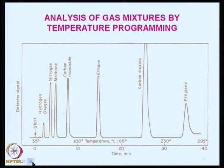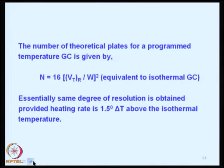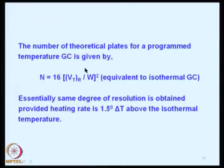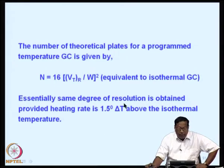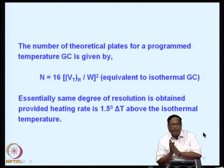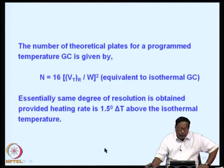This example clearly illustrates that temperature has a very profound effect on the separation of compounds. The number of theoretical plates for programmed temperature gas chromatography is given by n = 16(V_TR / W)², equivalent to isothermal GC. Essentially the same degree of resolution is obtained provided the heating rate is around 1.5 ΔT above the isothermal temperature. This is only a guideline and does not happen all the time.